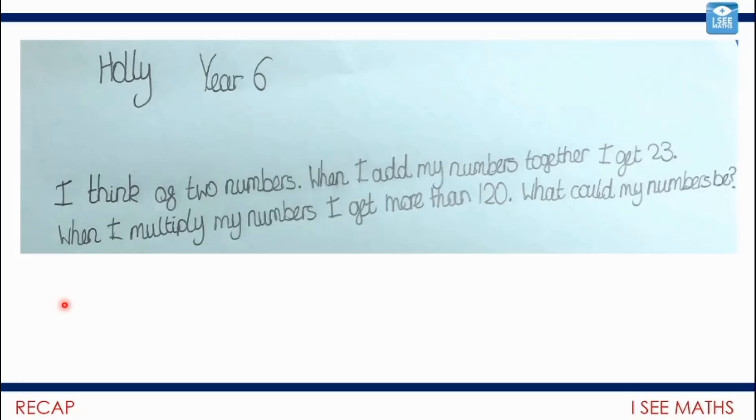I think of two numbers. When I add my numbers together I get 23. When I multiply my numbers I get more than 120. What could my numbers be? So your first challenge is pause the video and do the task. Can you find an answer, can you find different answers, can you find all the answers that there are? Have a go.